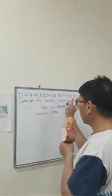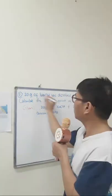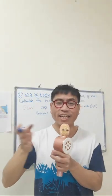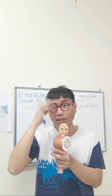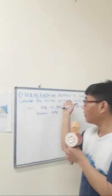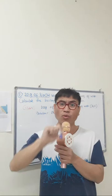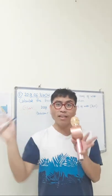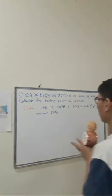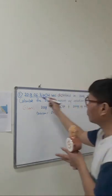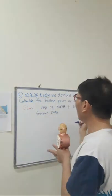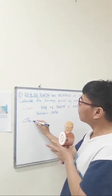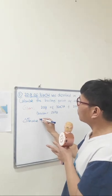Our solute here is sodium hydroxide. By common sense, it is the only chemical compound mentioned, so it is clearly the solute. Going back to the formula: delta T_b of solute is equal to K_b times i times molality, where K_b is the boiling point elevation constant.